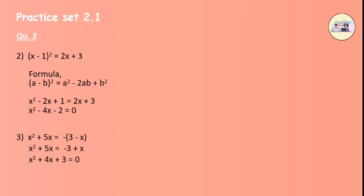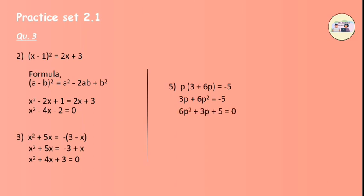Our next equation is p(3 plus 6p) equals minus 5. Multiplying p inside the bracket, we get 3p plus 6p squared equals minus 5. On further solving, we get the final equation as 6p squared plus 3p plus 5 equals 0.